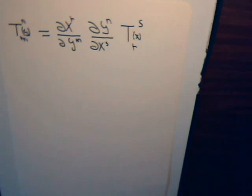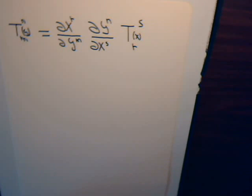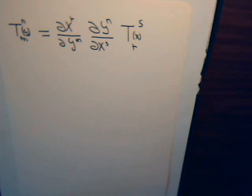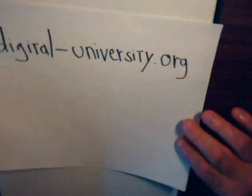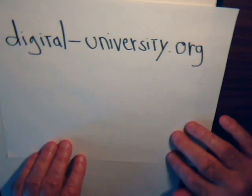That is all we have to say for this video. Once you recognize the patterns it becomes second nature to manipulate the symbols accordingly. In the next video we'll take a more detailed look at the properties of covariant and contravariant components, and that might take one or two more videos. Then we'll examine what a metric tensor is. Come back and join us for those videos. A reminder that the playlist for all the videos is at digital-university.org.